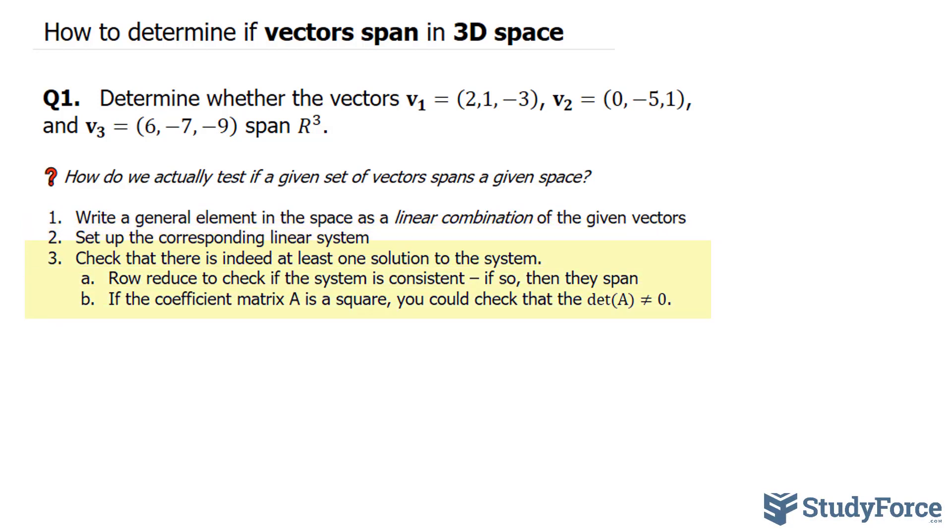check that there are at least one solution in the system, and there's two ways to do that. If it's a square matrix that you end up with after setting up the matrix in number two, and you find it's determinant not to be zero, then there's a solution. Otherwise, you row reduce to check if the system is consistent. So let's start with step number one. Write a general element.